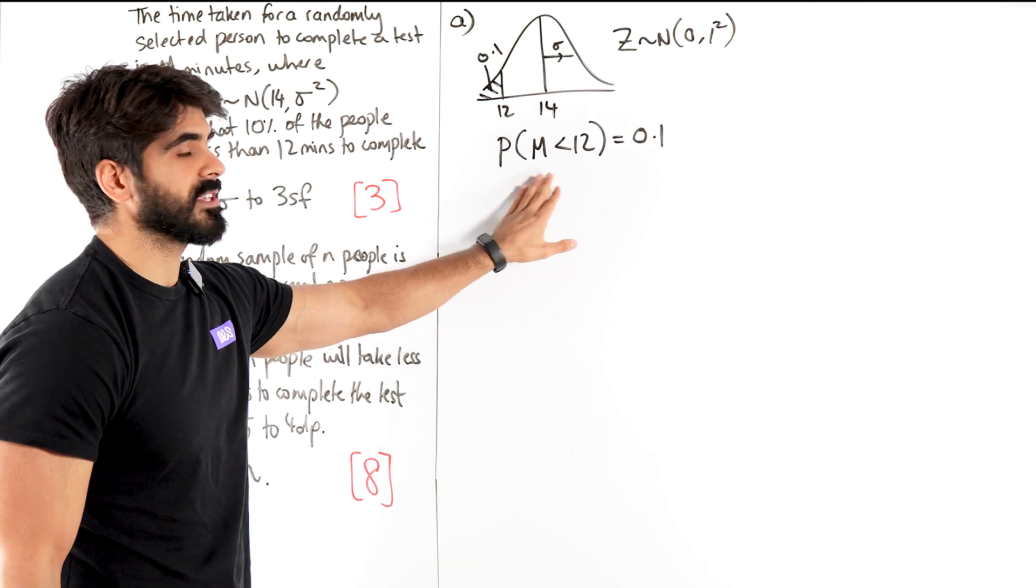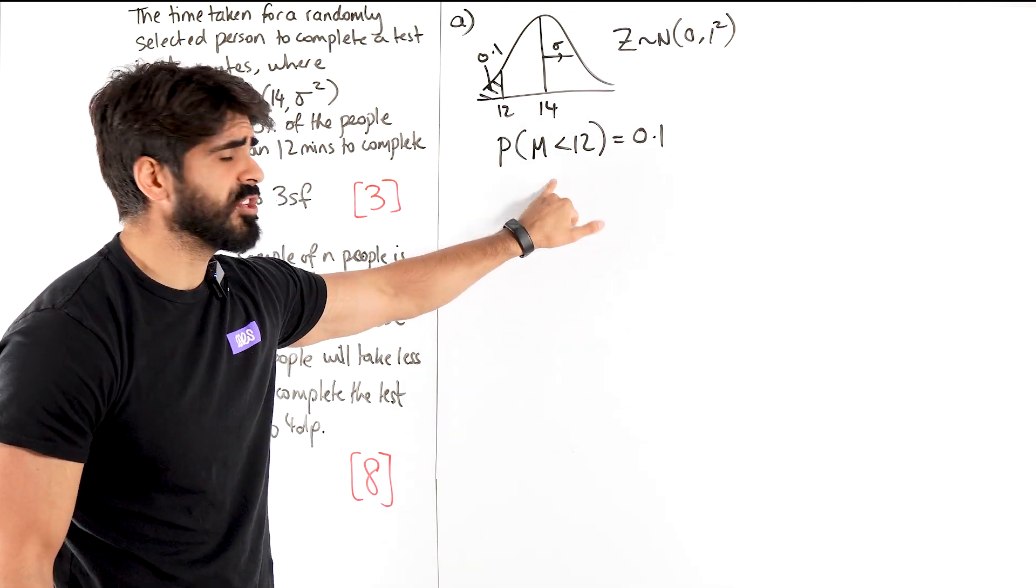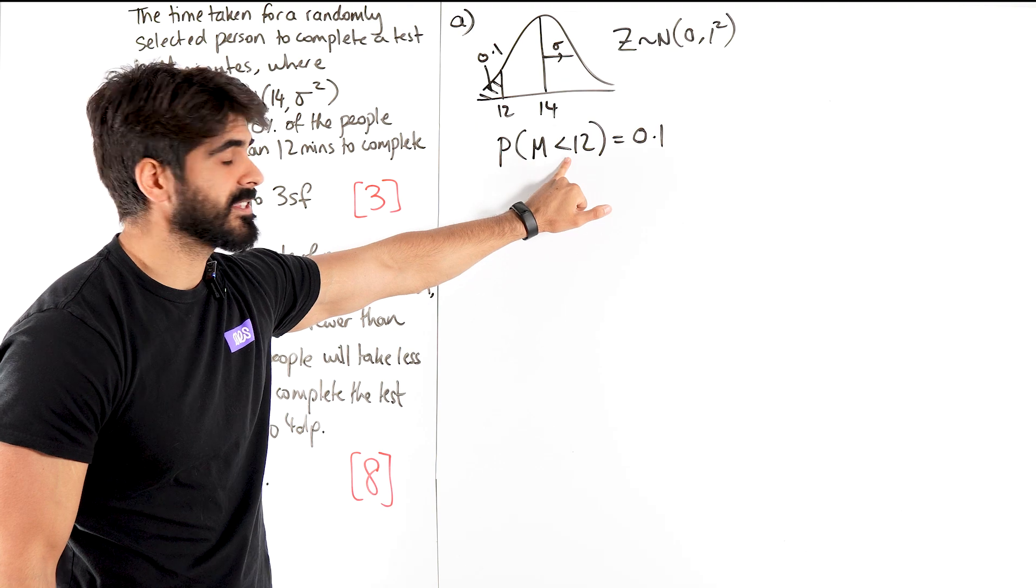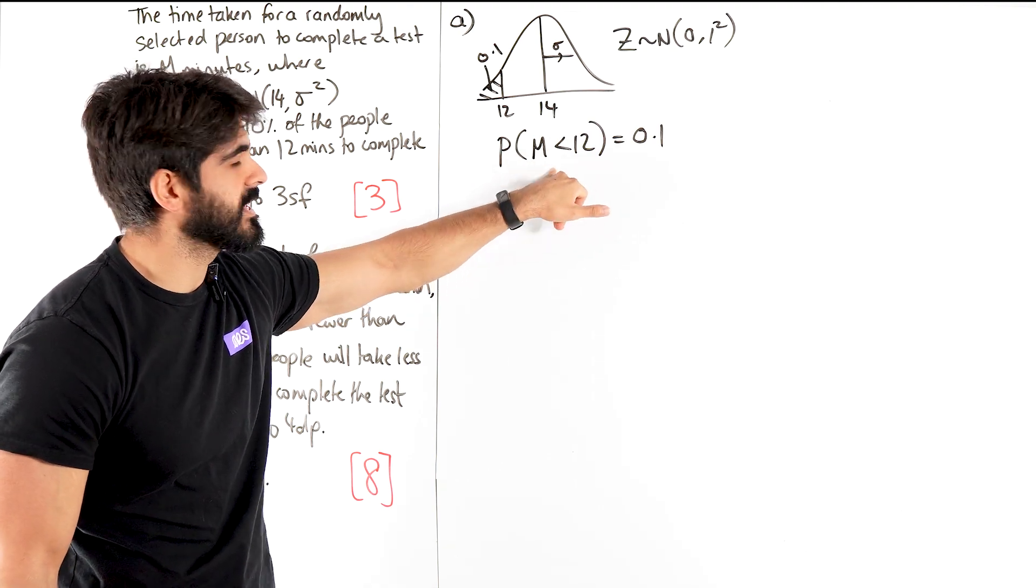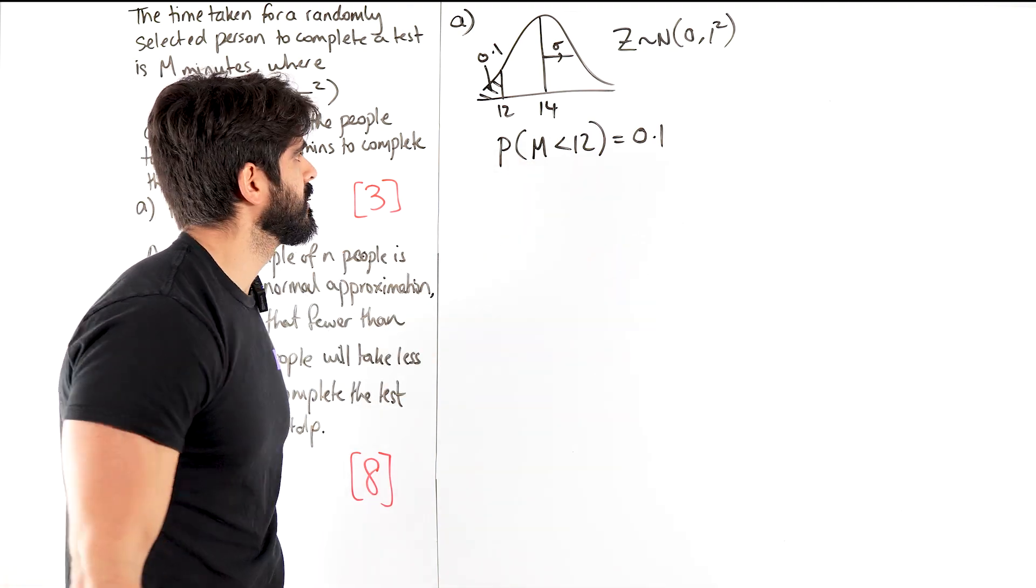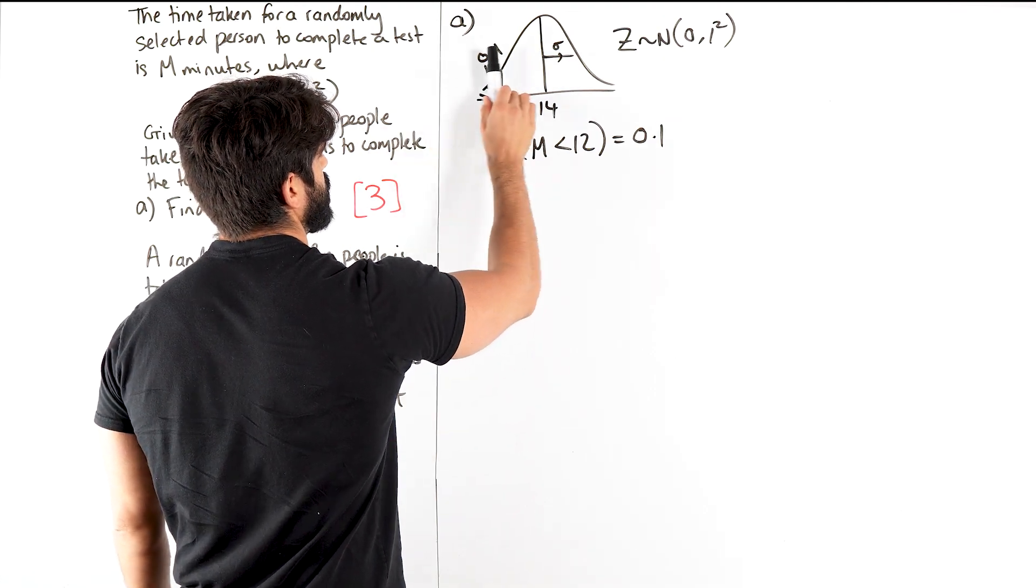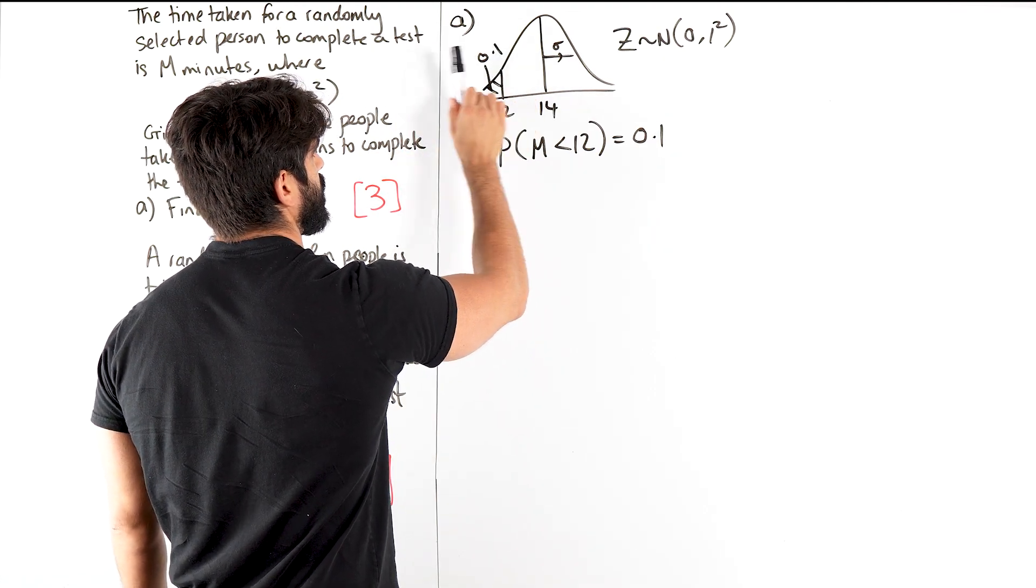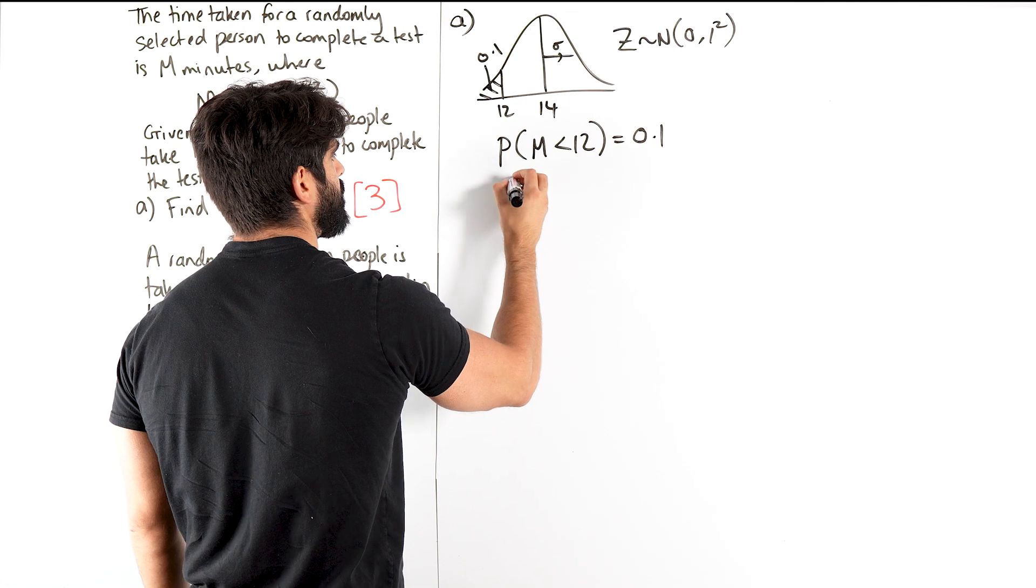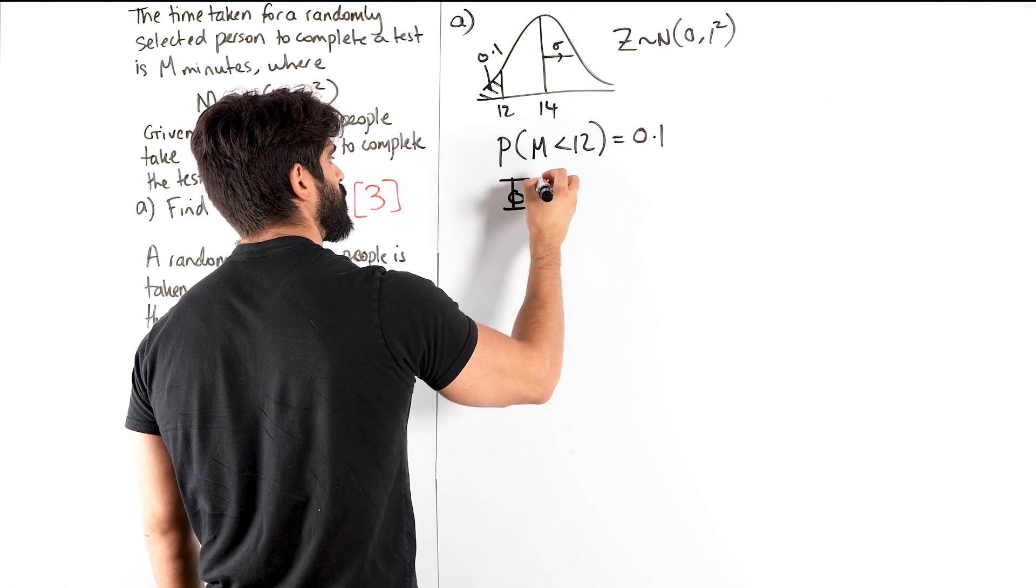So we're going to rewrite this in the Z plane. And when you convert it to Z, the probability that Z is less than is known as phi. The function is known as phi. So you must always make sure that you know this is a cumulative distribution, so up to 12, that's cumulative. When we convert that to Z, that becomes the function phi.